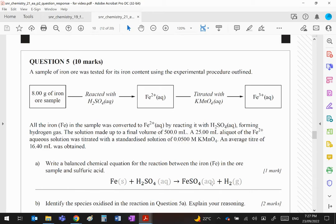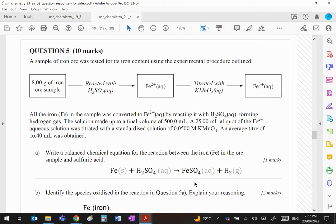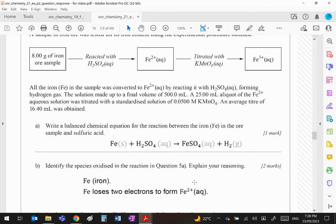Clearly Fe starts at zero, it becomes Fe2+. It's going up or it's losing electrons, either an increase in oxidation number or loss of electrons, both mean the same thing. Fe is basically being oxidized.